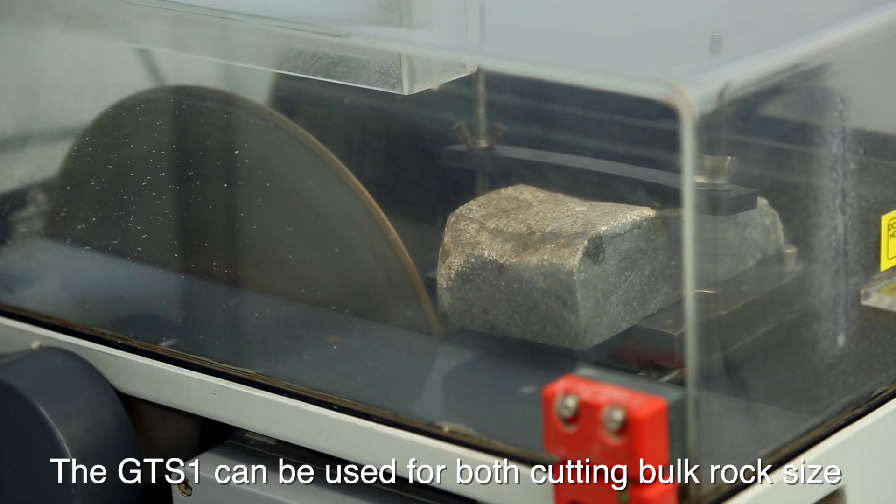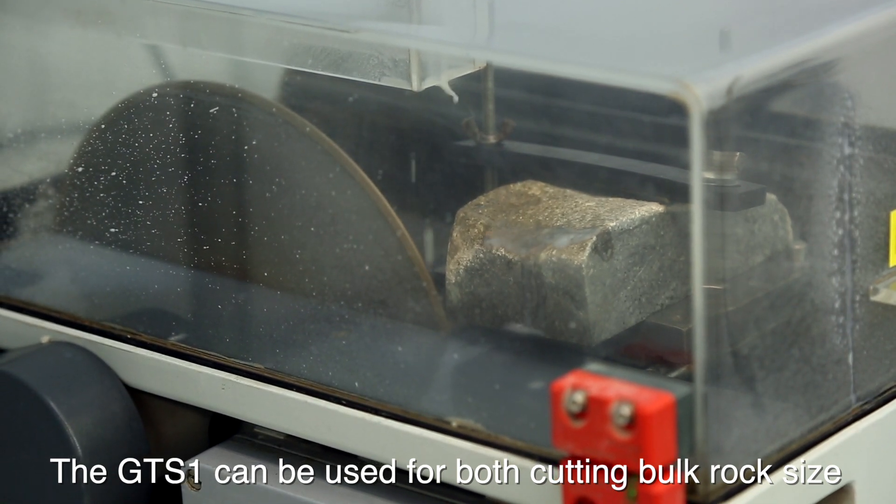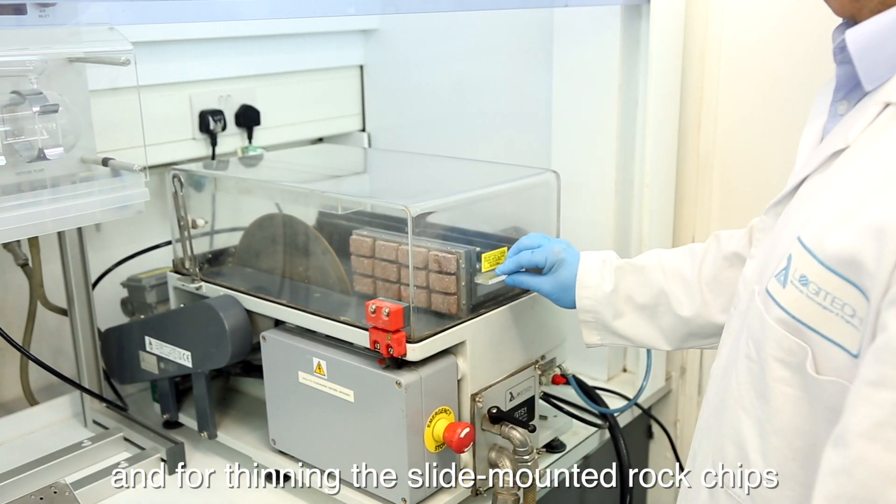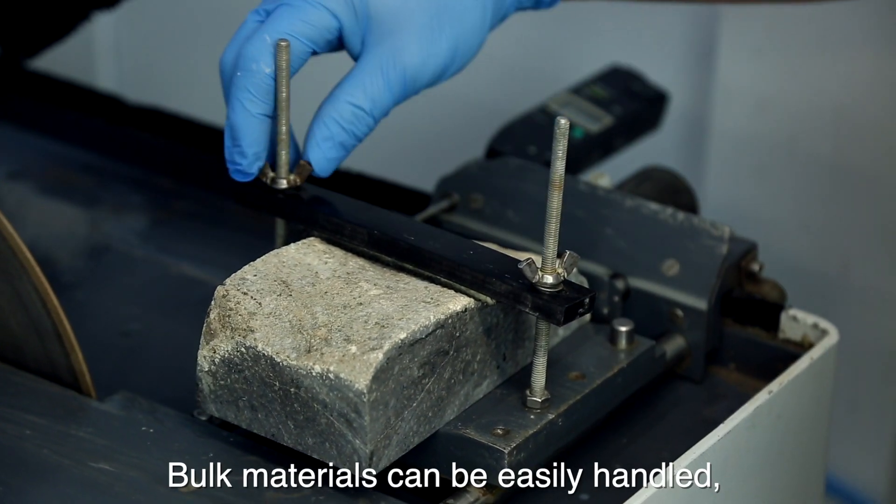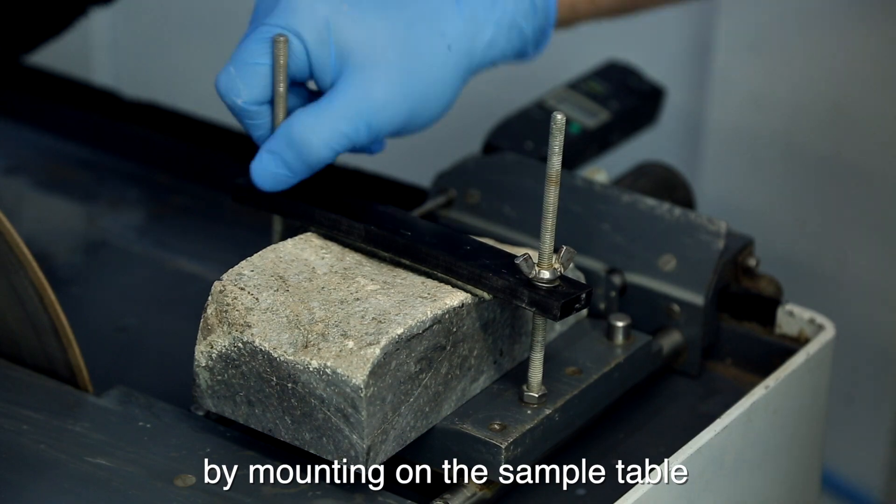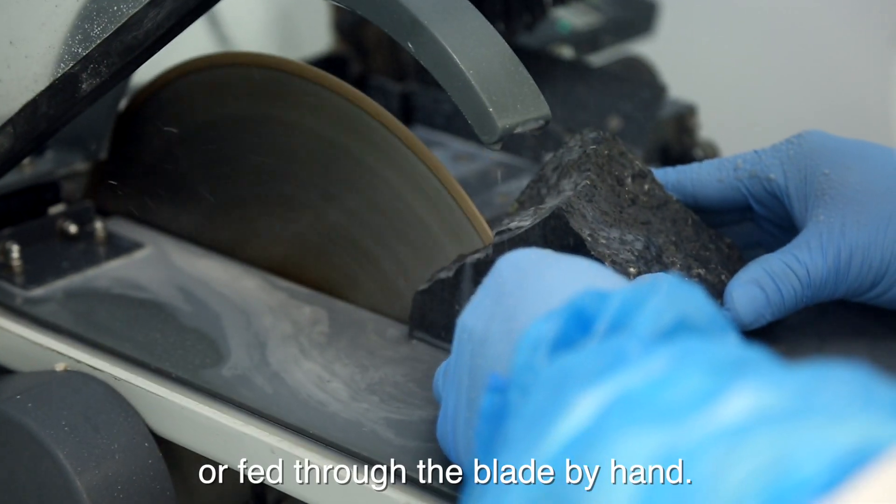The GTS-1 can be used for both cutting bulk rock size and for thinning the slide-mounted rock chips prior to final lapping. Bulk materials can be easily handled by mounting on the sample table or fed through the blade by hand.